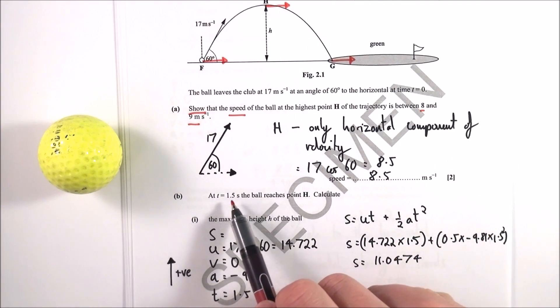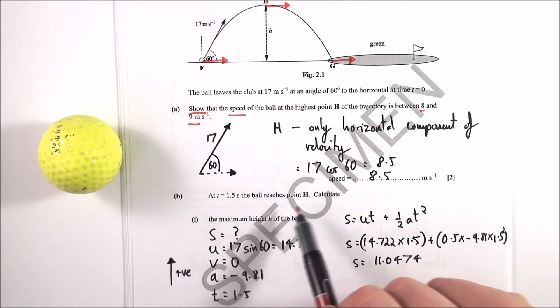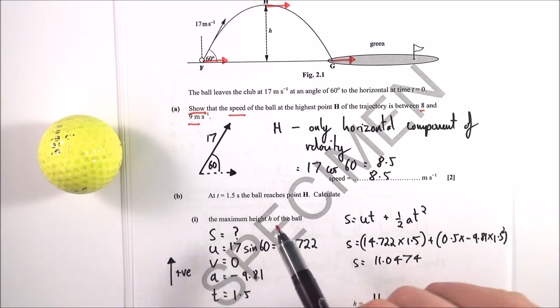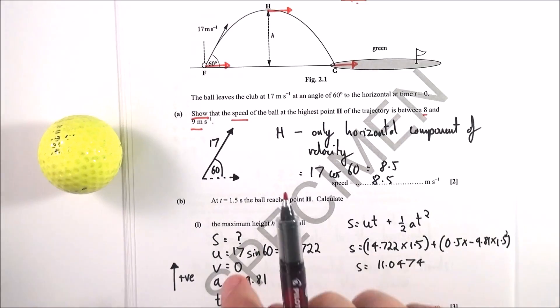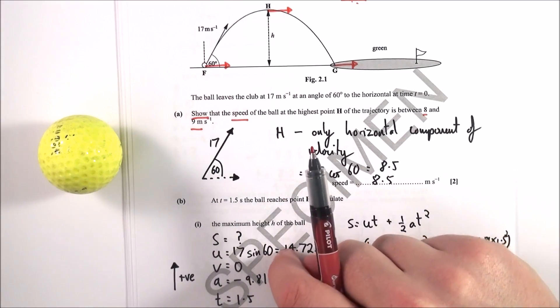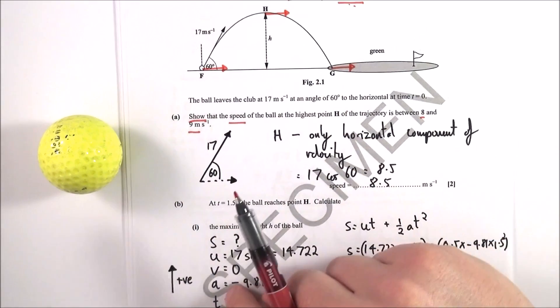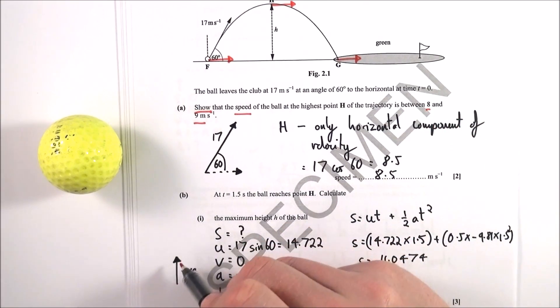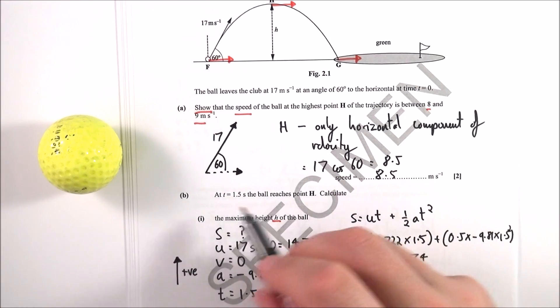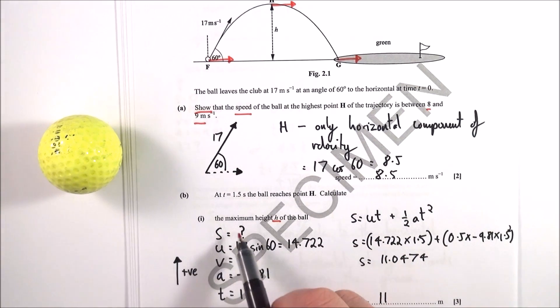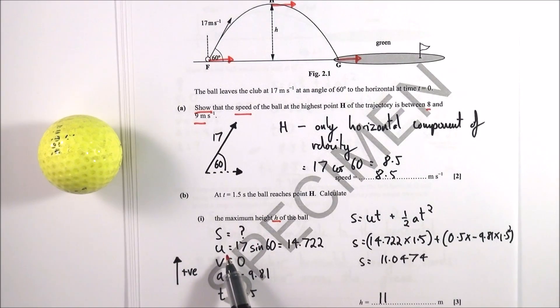At time t equals 1.5 the ball reaches the highest point H. Calculate the maximum height of the ball. What I did for this is I wrote down SUVAT vertically. This is what you have to do for every single SUVAT equation. I then chose upwards as a positive direction, and what we're looking for here is the height H of the ball, which is the S, so that's my unknown.